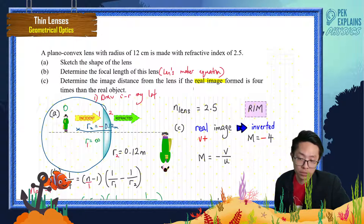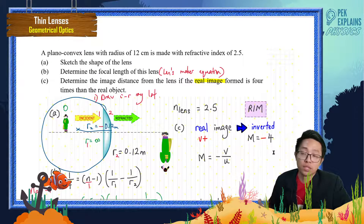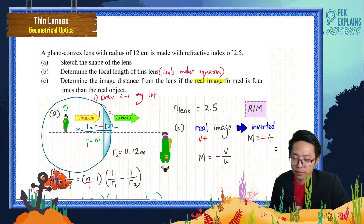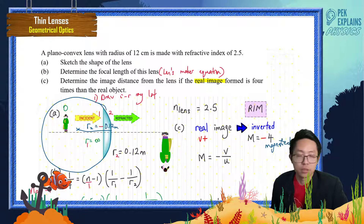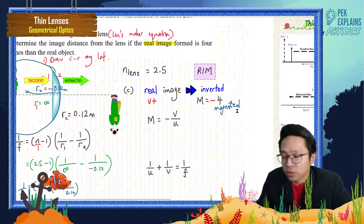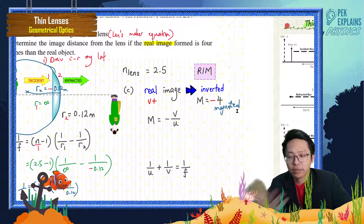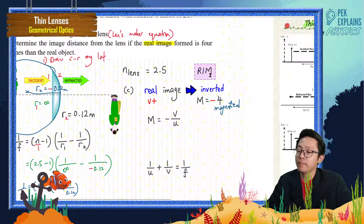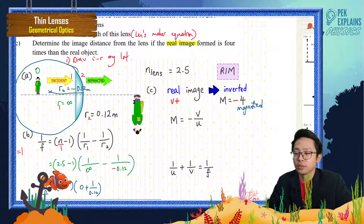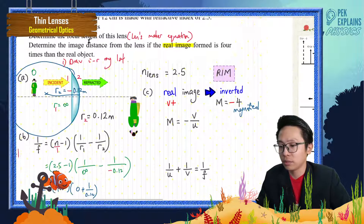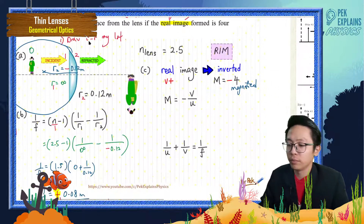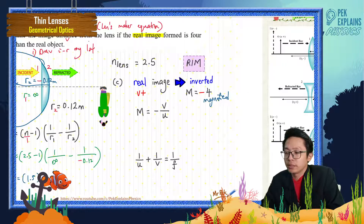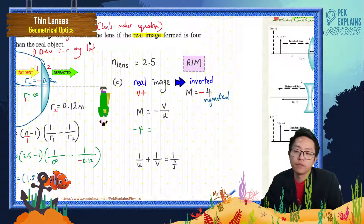You must put m = −4, not just 4, because it's a real inverted image. The characteristics of the image are: real, inverted, magnified. So the magnification is negative four because it's an inverted magnified real image.